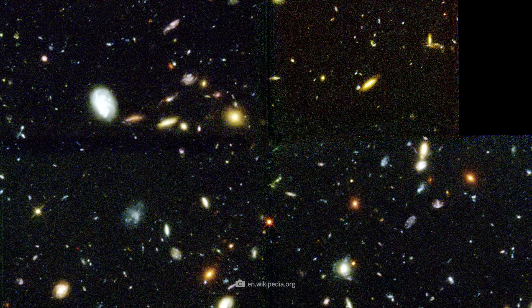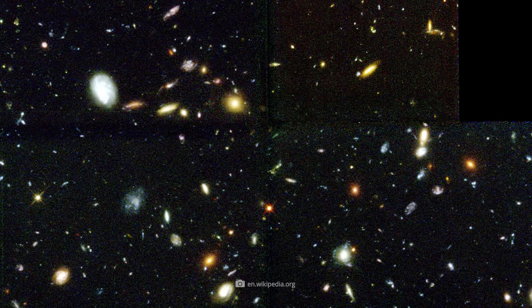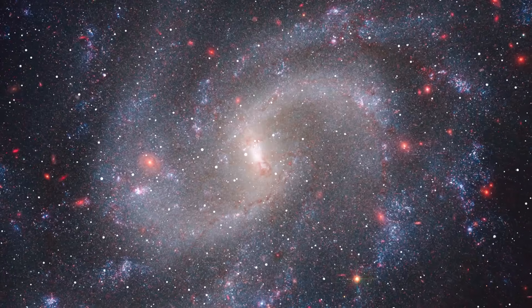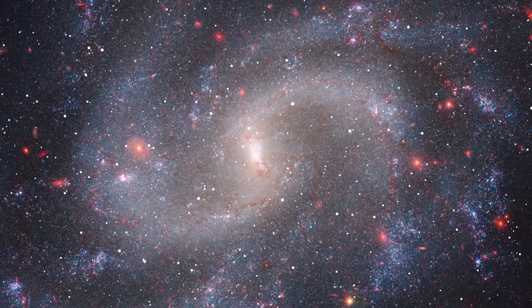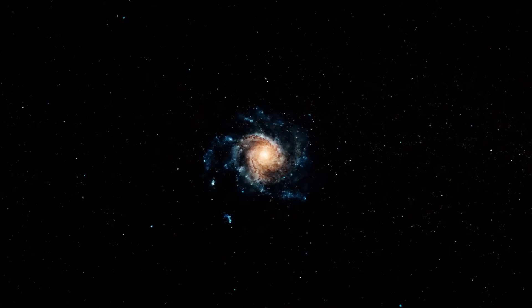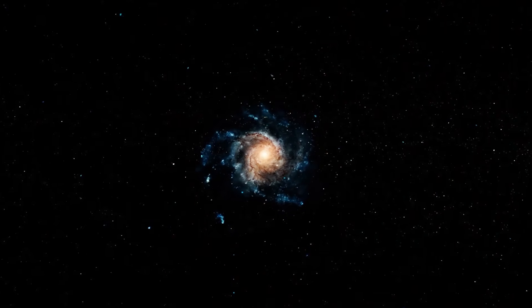However, Hubble's image showed evidence that many of these galaxies were small and irregular, which was interpreted as proof that galaxies evolve through mergers and growth. So how can it be that Webb is showing us well-developed and even more distant galaxies?